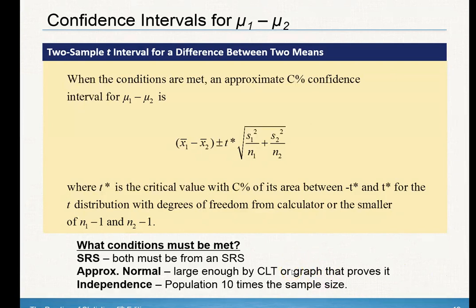Or you're going to have to make sure that you have the graph that proves it — you must draw that graph. Your normal probability plot must be linear, therefore it's approximately normal. Or with your box and whisker plot, it's going to be symmetrical and there's no outlier, so be careful with that.